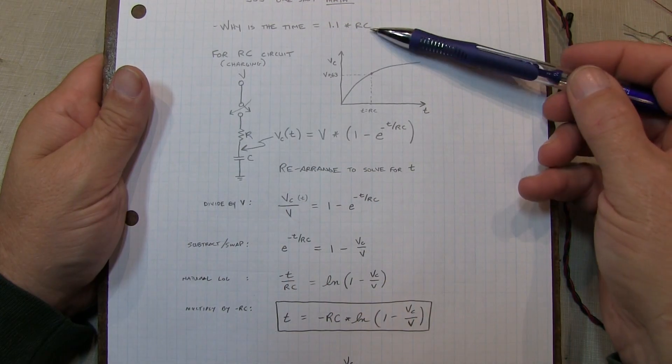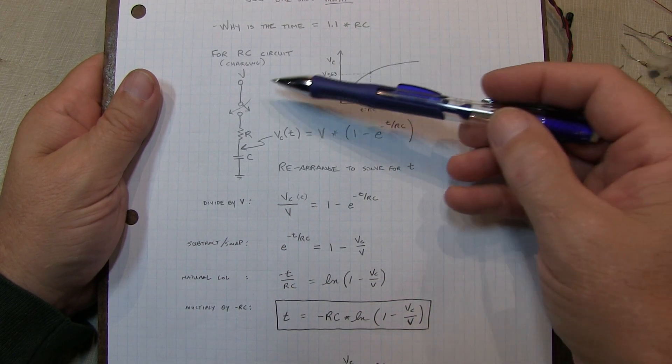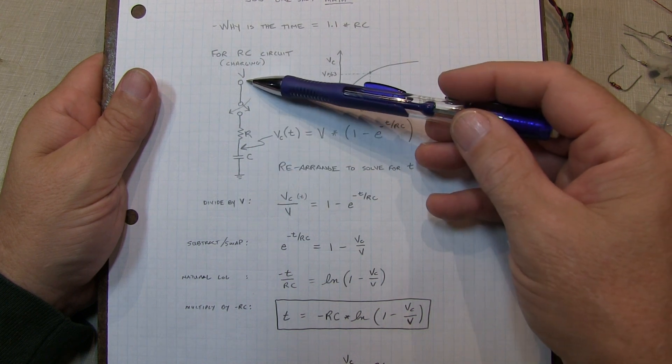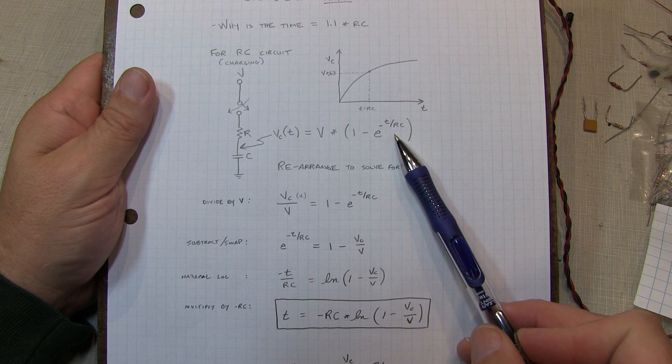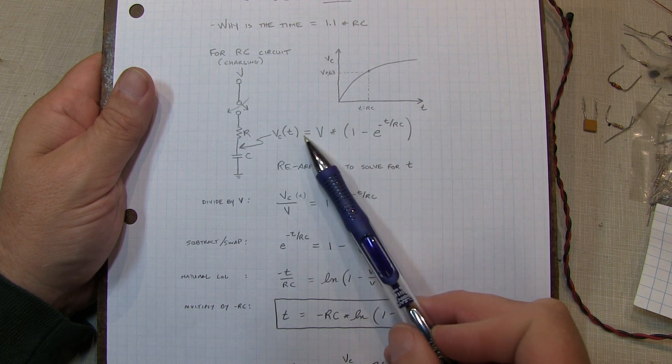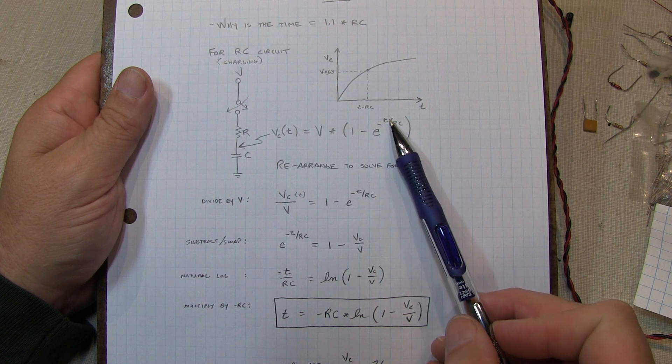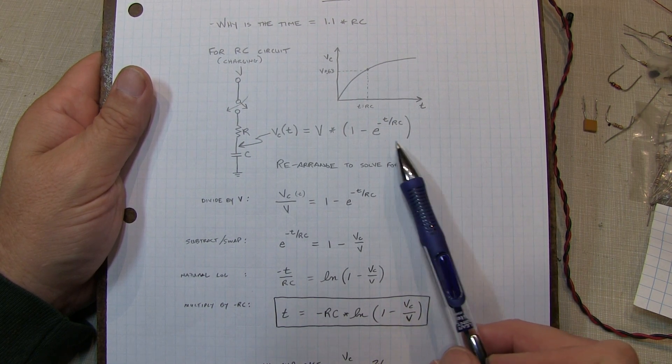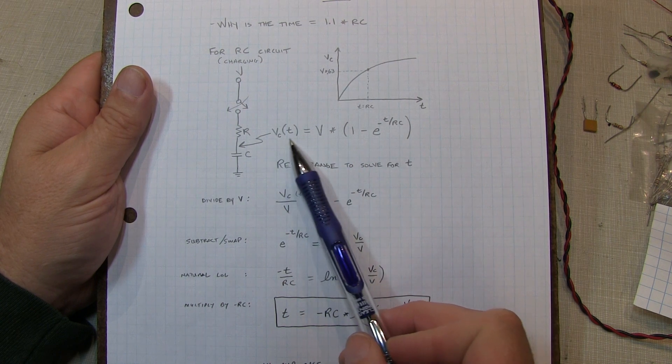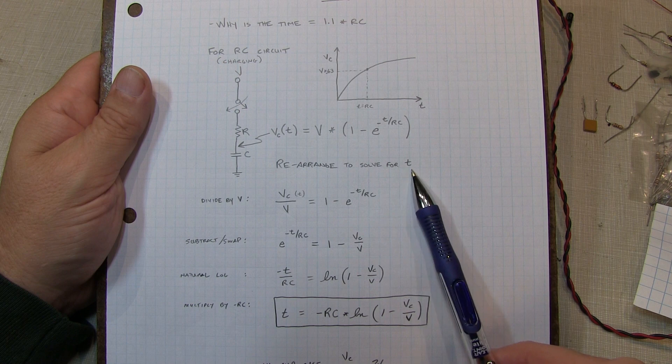Okay, so we'll answer the question of where the 1.1 times RC came from. For a simple RC network, when you initially apply a voltage, the voltage across the capacitor follows this equation. And so it's just the applied voltage times 1 minus e to the minus T over RC, the RC time constant. Now if we want to figure out how long it takes to get to a specific voltage, we just have to solve for T. So it's just rearranging the equation.